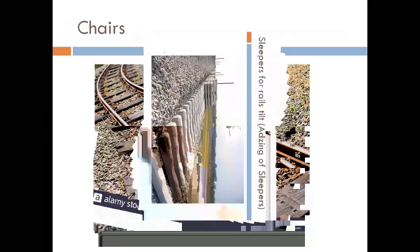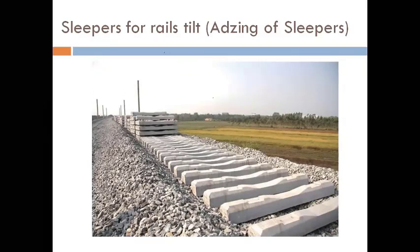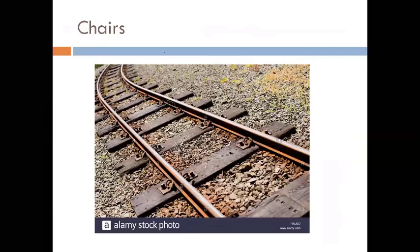To summarize: if the slope of 1 in 20 is provided in the train wheels, it is called coning of wheels; if it is provided in the sleepers, it is called edging of sleepers; and if it is provided in the rails, it is called tilting of rails.